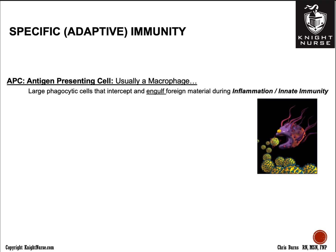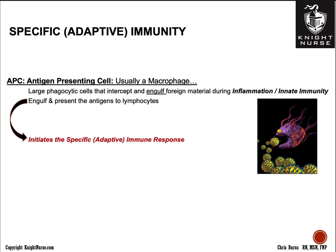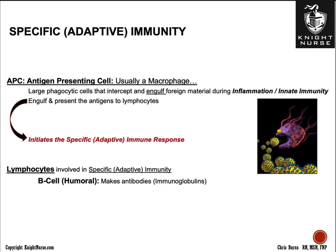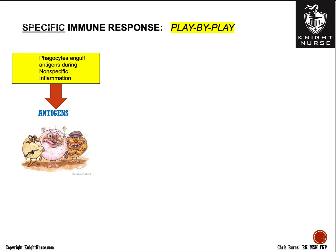Specific adaptive immunity begins at the end of inflammation. An antigen presenting cell — normally a macrophage — engulfs foreign material, recognizes it as foreign, and presents it to the lymphocytes, the B's and T's, initiating specific immunity. B cells provide humoral immunity, making antibodies also known as immunoglobulins. T cells are cell-mediated — they go door to door attacking and destroying any infected or compromised cells for a specific invader.